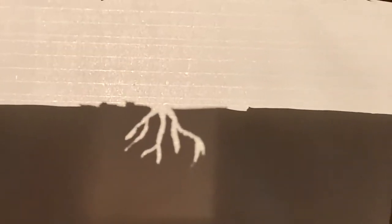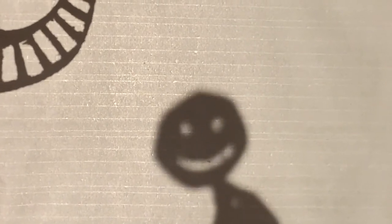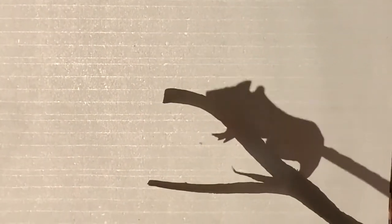A traveler on a dusty road strewed acorns across the lea, and one took root and sprouted up and grew into a tree. Love sought its shade at evening time to breathe its early vows, and age pleased in heights of noon to bask beneath its boughs. The titmouse loved its dangling twigs, the birds sweet music bore. It stood a glory in its place, a blessing evermore.